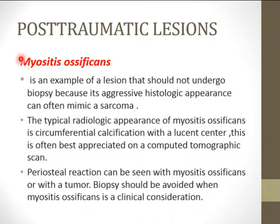One of the most important post-traumatic lesions is myositis ossificans. It should not undergo biopsy because the histopathologic appearance is so aggressive that it might mimic a sarcoma, potentially leading to unnecessary amputation. It has a typical radiological appearance of peripheral calcification with a lucent center, which is the opposite of a sarcoma like osteosarcoma, which has a dense center and lucent periphery. Periosteal reaction can be seen but biopsy should be avoided.